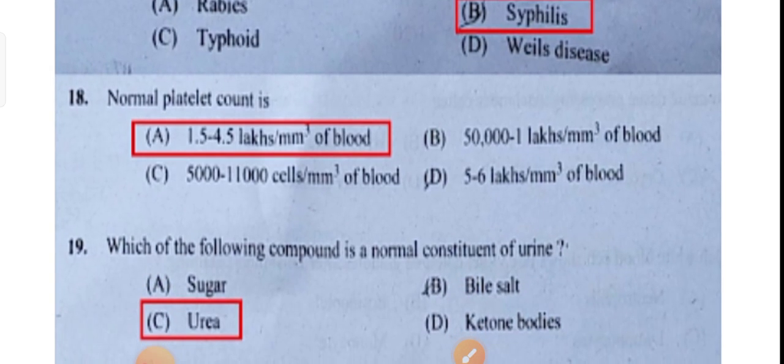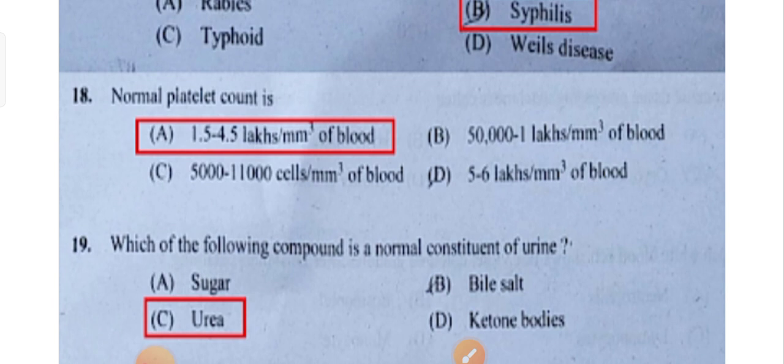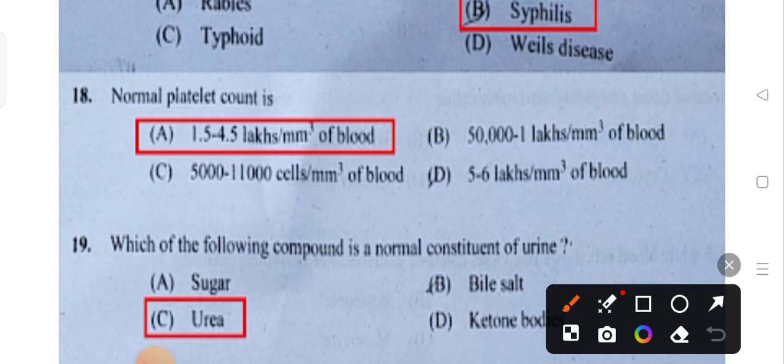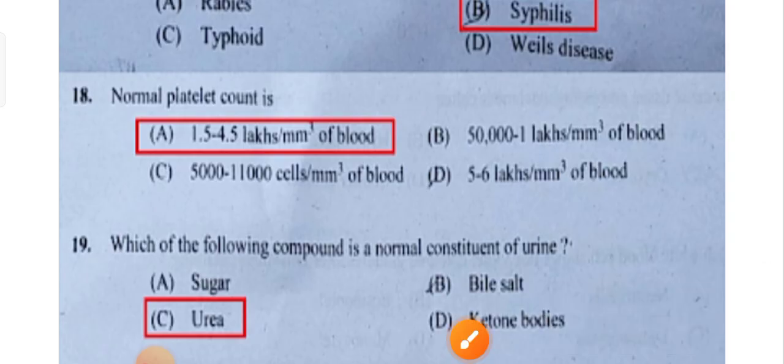The normal platelet count is 1.5 to 4.5 lakhs per millimeter. Option A is the correct answer.